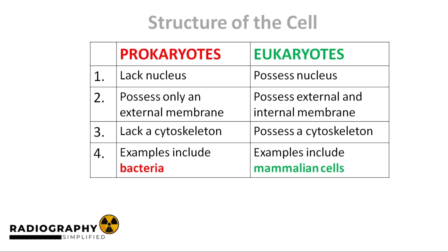Eukaryotes have both an internal and external membrane. Think of the internal membrane as the walls inside your house that help separate the living room from the bedroom. In essence, the internal membrane helps to compartmentalize different metabolic activities. What makes the eukaryotic cell so complicated is that it allows multiple biochemical and metabolic processes to occur simultaneously within the cell. The internal membrane separates the areas in which these activities are going on, preventing them from interfering with each other. The lack of an internal membrane limits the number of metabolic activities that can go on simultaneously in a prokaryotic cell.